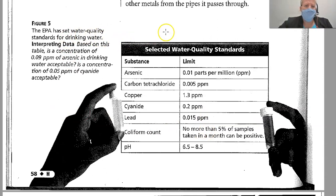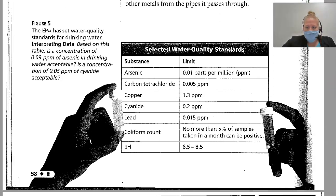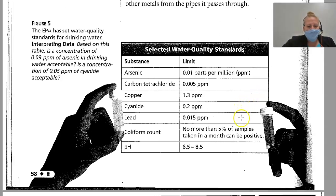Here's Figure 5 — the EPA has set water quality standards for drinking water. Arsenic is limited to 0.01 parts per million. Carbon tetrachloride: 0.005 parts per million. Copper cannot be above 1.3 parts per million. Cyanide: 0.2 parts per million. Lead: 0.015 parts per million. For coliform count, no more than 5% of samples taken in a month can be positive — coliform is a bacteria that makes you sick if it's present. Your pH should be between 6.5 and 8.5.